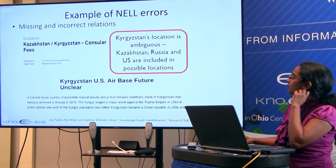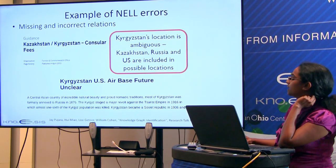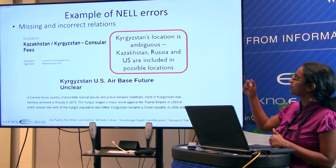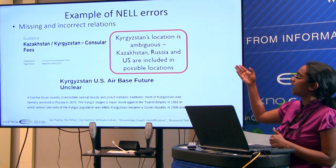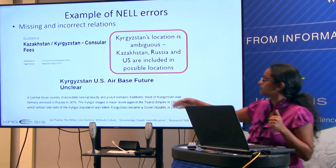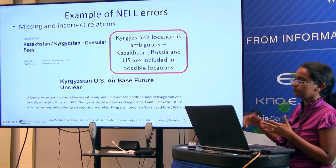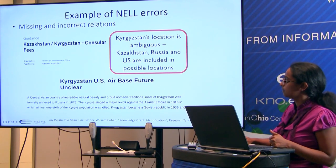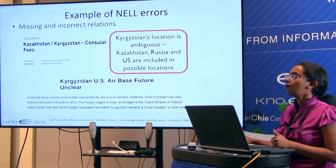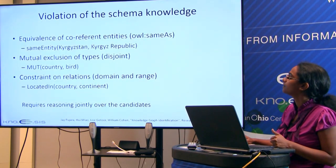Another error: they say Kyrgyzstan is located in Kazakhstan, Russia, and the US. The US appeared because of the phrase 'Kyrgyzstan US Air Force Base,' so they concluded it is located in the US. These examples illustrate the types of problems these knowledge graphs have.